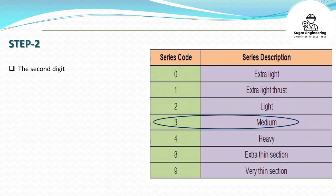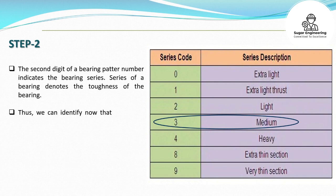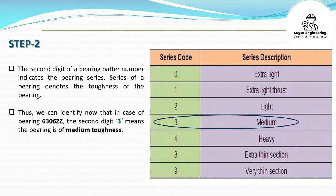Step 2: The second digit of a bearing pattern number indicates the bearing series. The series of a bearing denotes the toughness of the bearing. In the case of bearing 6306ZZ, the second digit 3 means the bearing is of medium toughness.